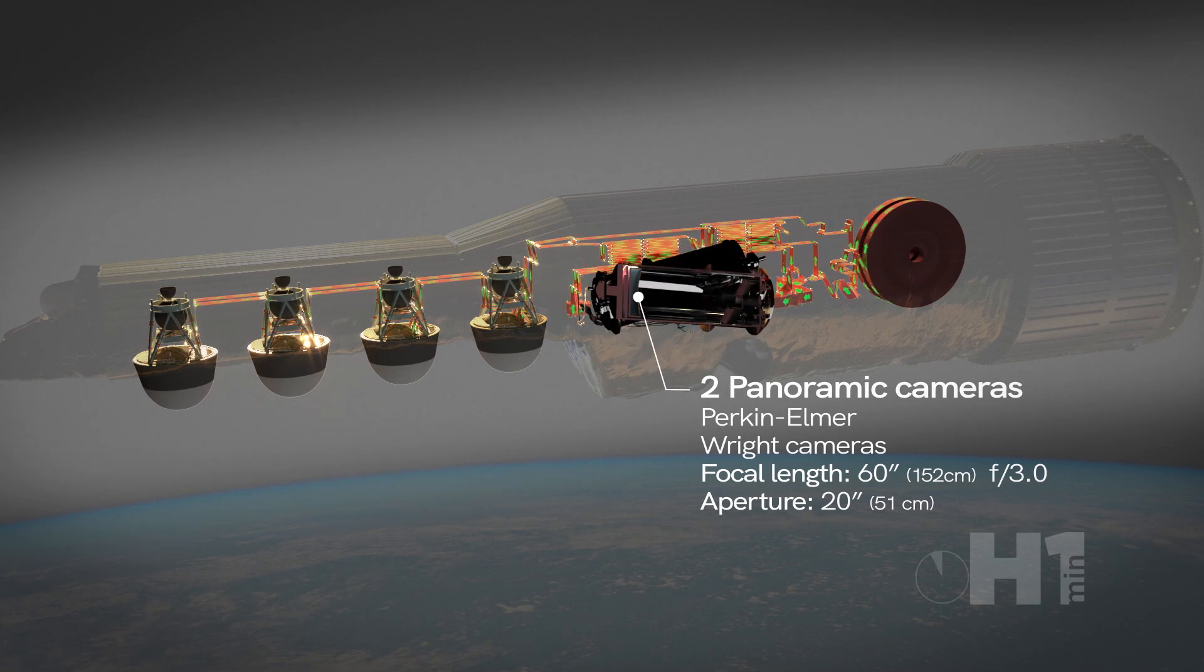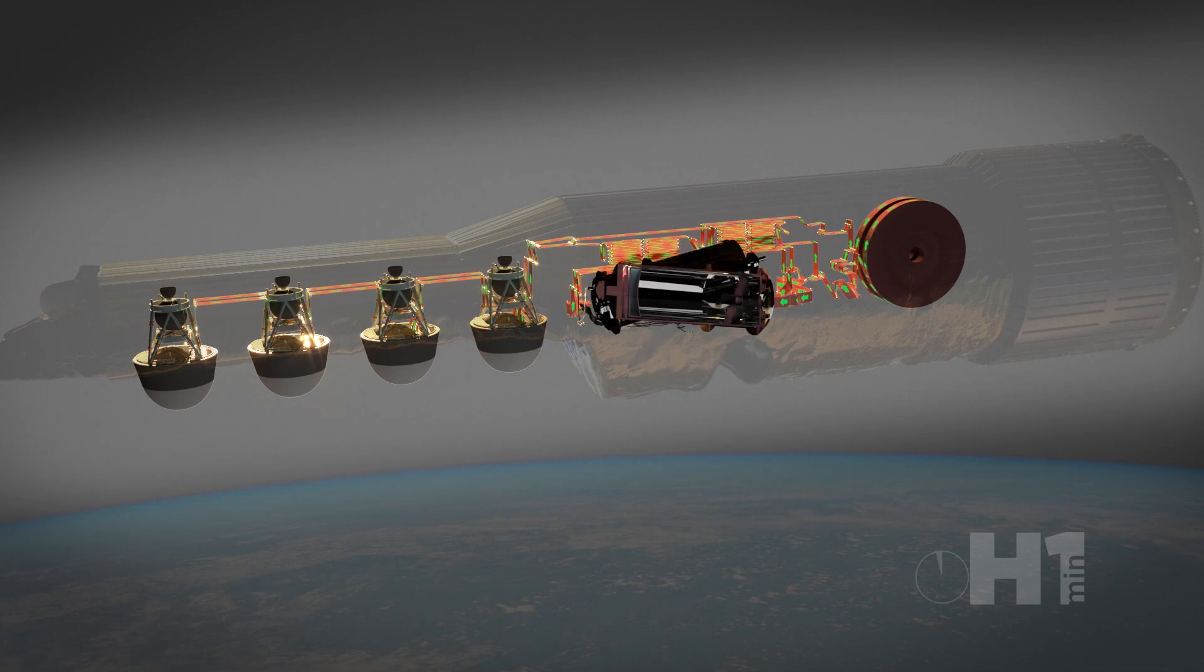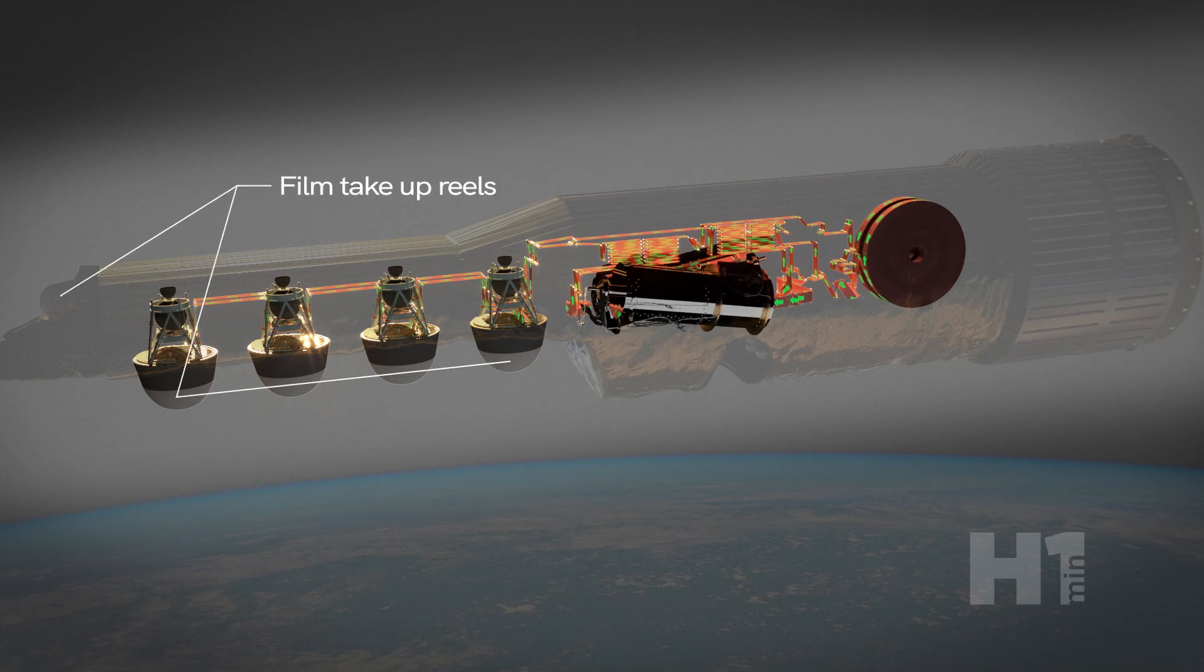A complex spooling system moved the film through 100-plus rollers at a high rate of speed depending on the altitude, while traveling over a predetermined trajectory.